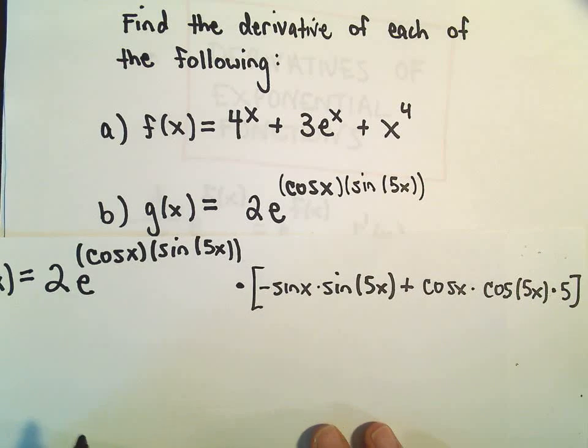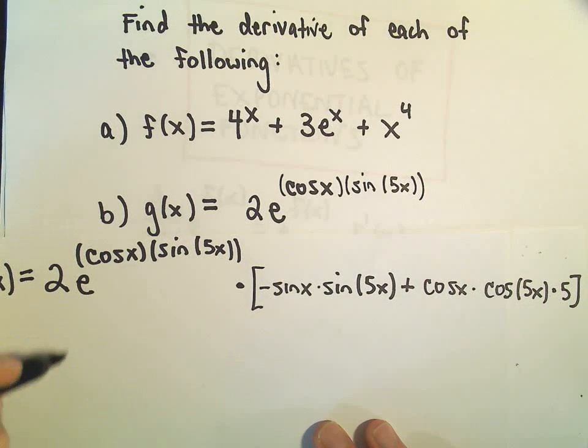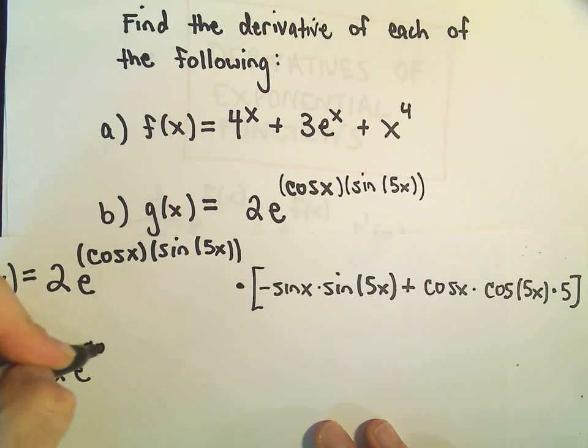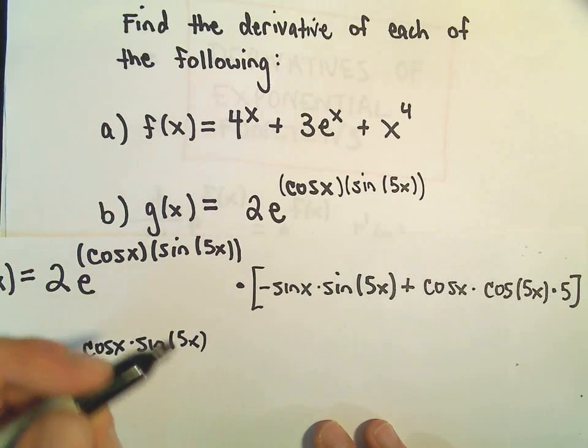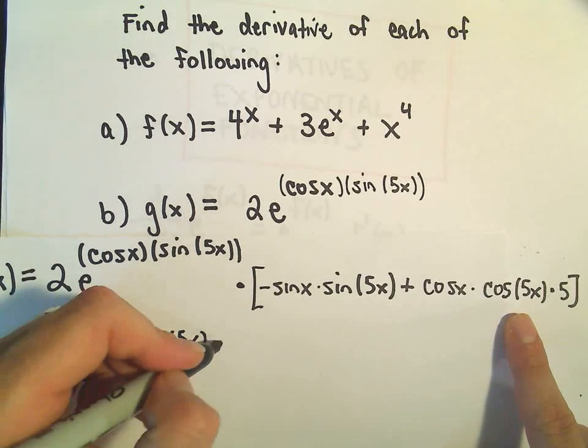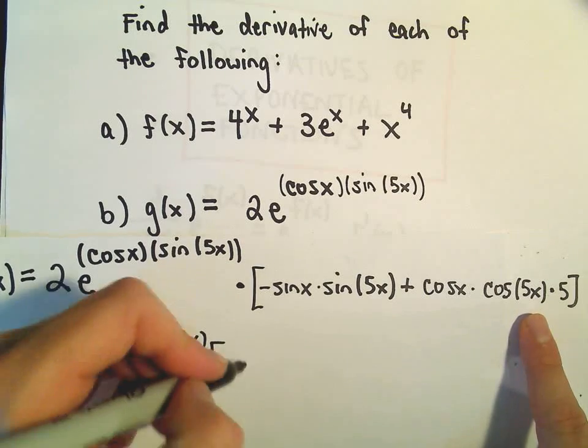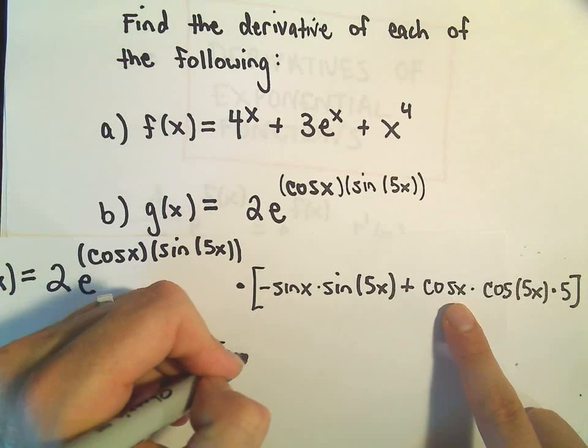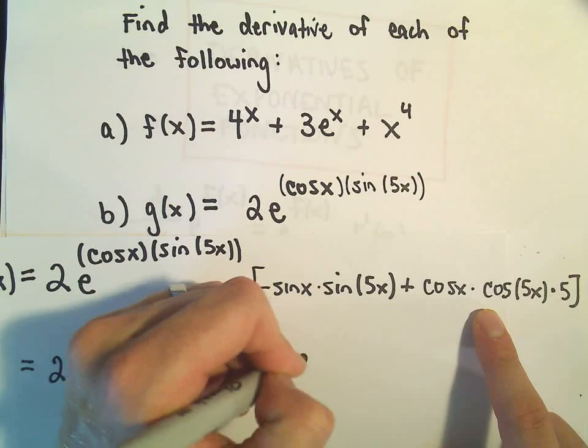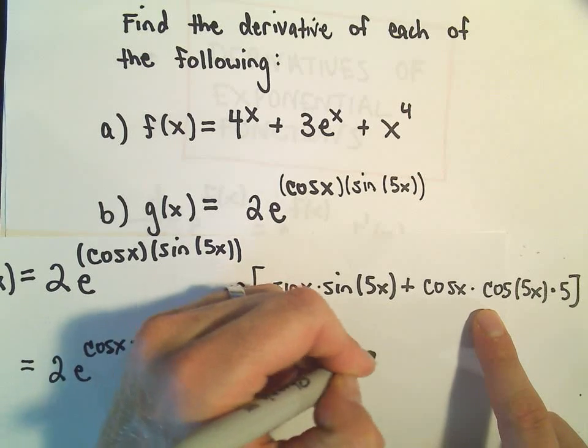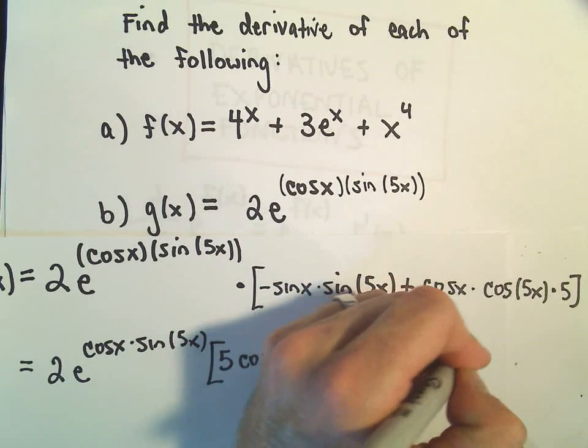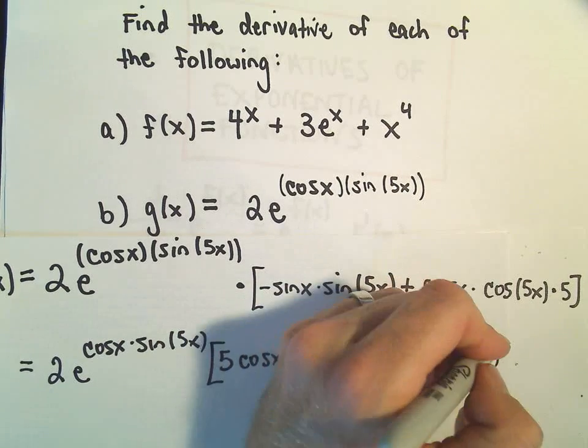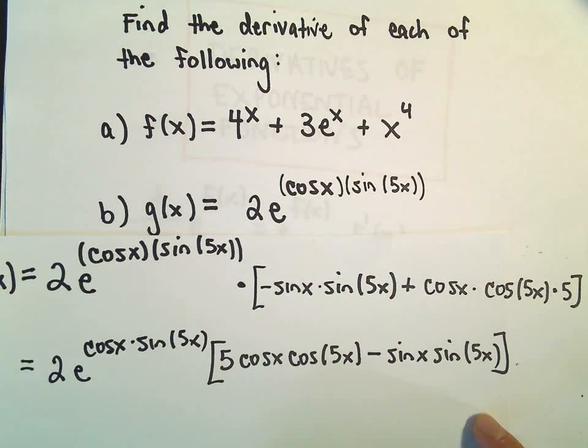So I don't see a real good, clean way to rewrite this. So I would say this is our derivative. Maybe do a couple things with the brackets. Since this has a minus sign, we can write the positive stuff first. I would probably write the 5 first. So you could write 5 cosine x times cosine of 5x. And then we could write minus sine x times sine of 5x. And that would be our derivative for part b.